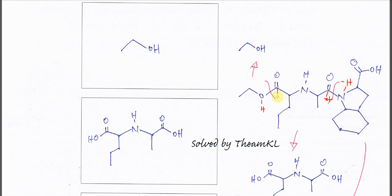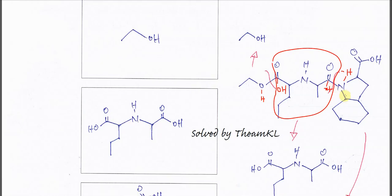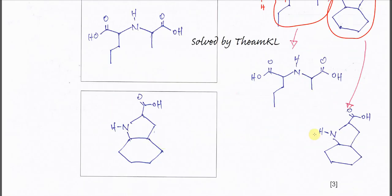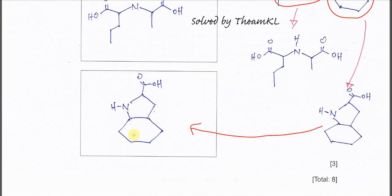This one will get OH, and therefore it will form a dicarboxylic acid — with COOH and COOH — and the remaining structure unchanged. And here because the N now gets H, it will form an amine. So these are the three compounds that form.